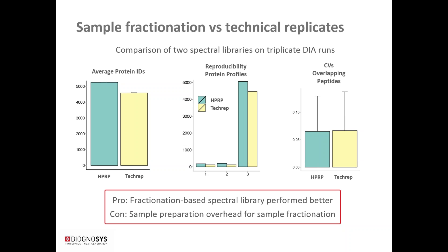To be clear, the DIA measurements are done without prefractionation, in a single-shot experiment. The downside is that sample fractionation adds overhead to sample preparation, but this experiment clearly shows you get a higher number of average protein IDs, better reproducibility, and lower CVs.